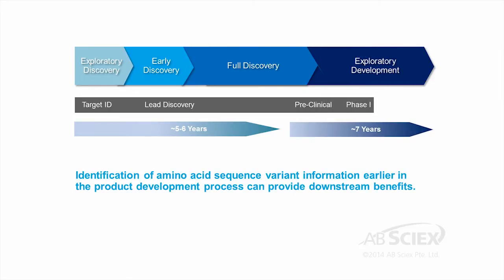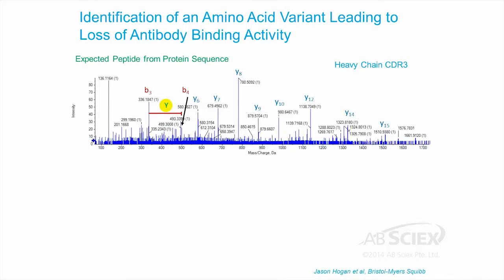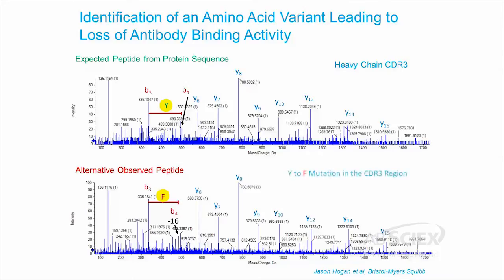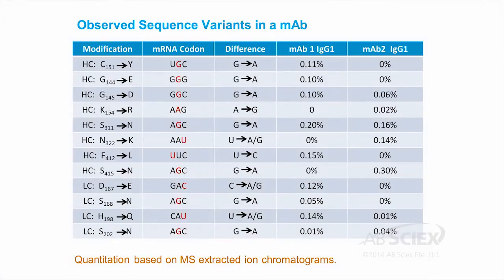AB SCIEX tools detect and identify the low-abundance ions at the same time as the dominant species with our widest dynamic range, thus enables sequence variant analysis, which greatly contributes to product quality by revealing previously unknown variants.